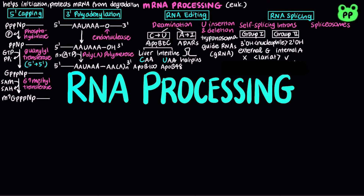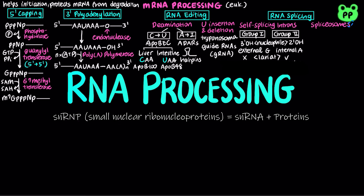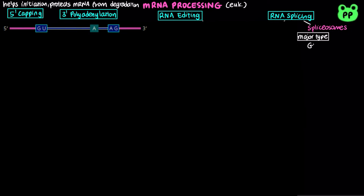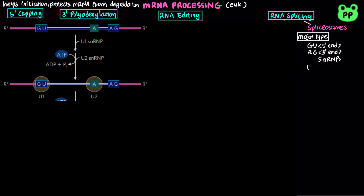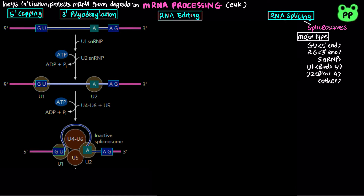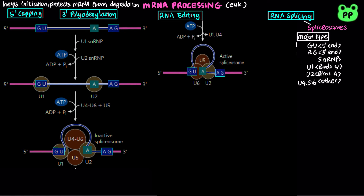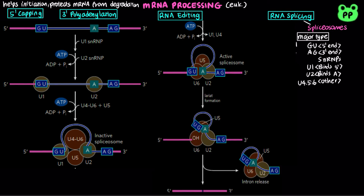The same lariat-forming mechanism as group 2 introns is also catalyzed by the spliceosome, which is made of ribonucleoproteins, abbreviated as snRNPs, each with small nuclear RNAs or snRNAs and proteins. The major type of spliceosome includes the dinucleotide GU at the 5' end and AG at the 3' end, marking sites for splicing. First, U1 snRNP binds GU at the 5' splice site. U2 snRNP then binds the internal adenosine residue, causing a bulge that displaces and helps activate the adenylate. The 2' hydroxyl group of adenosine forms a lariat structure through a 2' to 5' phosphodiester bond. U4, U5, and U6 snRNPs then bind, forming the inactive spliceosome. Internal rearrangement converts it to the active spliceosome, producing the intron lariat structure and the spliced mRNA.